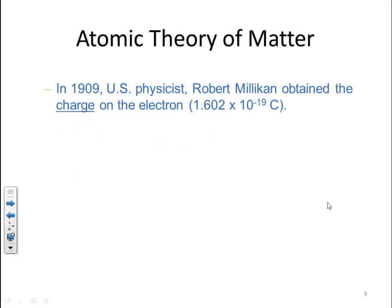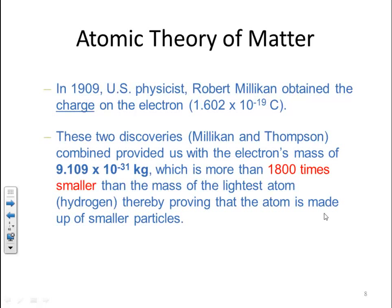In 1909, U.S. physicist Robert Millikan determined the charge on the electron, which was 1.602 × 10⁻¹⁹ coulombs — achieving what Thomson could not. The combined discoveries of Millikan and Thomson provided the electron's mass: 9.109 × 10⁻³¹ kilograms, which is more than 1,800 times smaller than the mass of the lightest atom, hydrogen, thereby proving that the atom is made up of smaller particles.